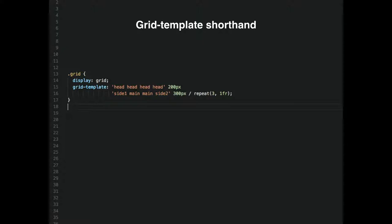We're doing something a little weird with a dot in the grid area template — the dot just means leave that space blank. That could be one dot or multiple dots. CSS Grid is also supported in all major browsers, including IE11. But IE11 supports a very early version of CSS Grid — it's almost worse because it's kind of broken.